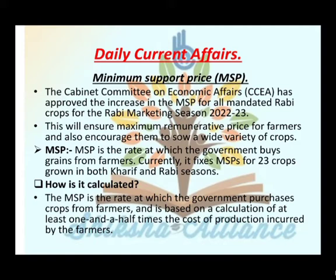Ye ensure karega ki maximum cumulative price mile farmer ko, aur ye encourage karega unko ki wo stroke kare wide variety of crops ko. MSP (Minimum Support Price) wo rate hota hai jisme government grains ko farmers se buy karta hai. Currently, MSP fix kiya jata hai 23 crops ke liye jo grown kiye jate hain dono kharif aur rabi season mein.